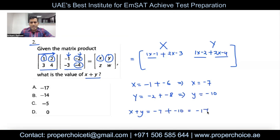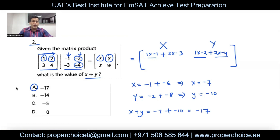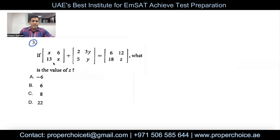So x plus y is negative 7 plus negative 10, which equals negative 17 — that is option A. This is how you answer questions like this. If you use a calculator you get all values x, y, z, w; I just solved for x and y manually. Use whichever method is more convenient.